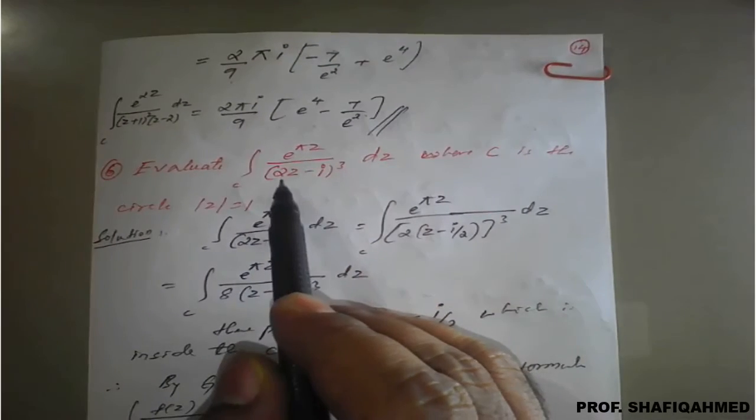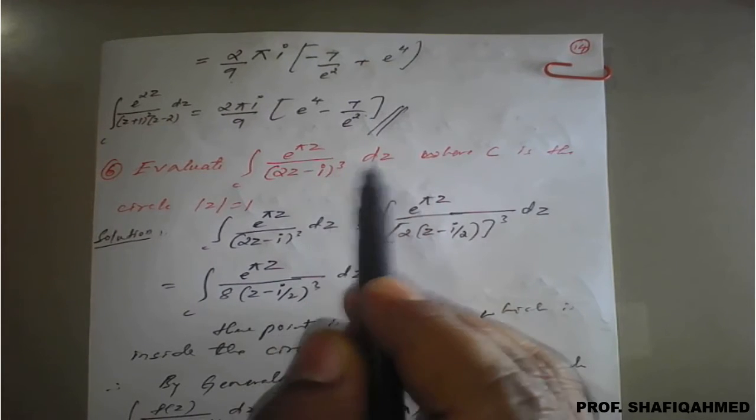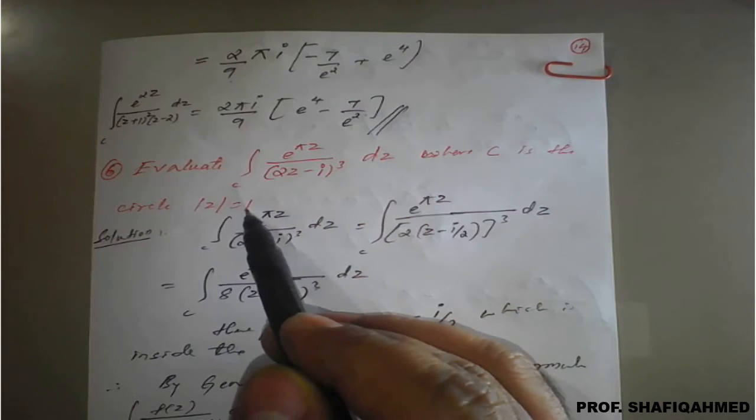The problem is to evaluate the integral of e raised to pi z upon 2z minus i raised to 3 dz, where c is a circle of modulus z equals 1.